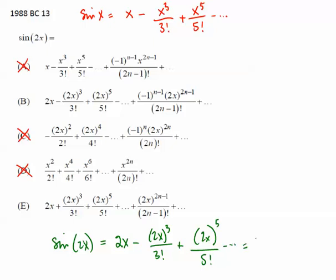So that will be 2x minus 8x to the 3rd power over 3 factorial.